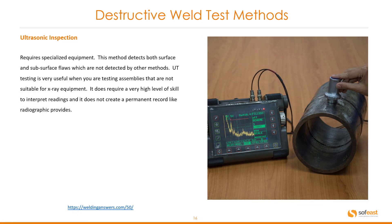Ultrasonic inspection requires specialized equipment. This method detects both surface and subsurface flaws which are not detected by other methods. Ultrasonic testing is very useful when testing assemblies that are not suitable for x-ray equipment. It does require a very high level of skill to interpret readings, and it does not create a permanent record like radiographic testing provides.